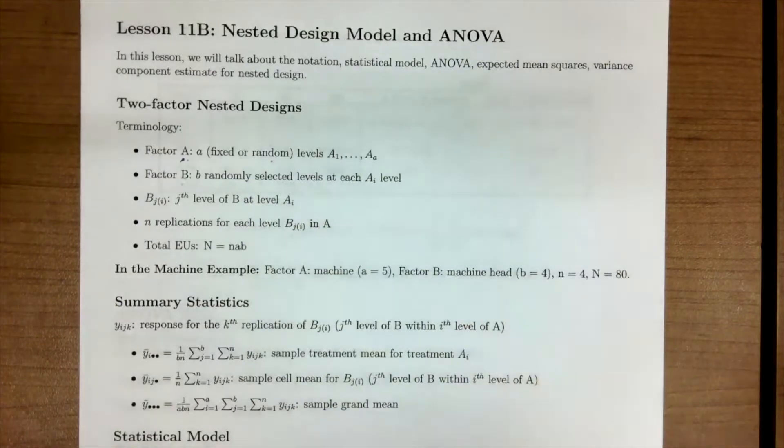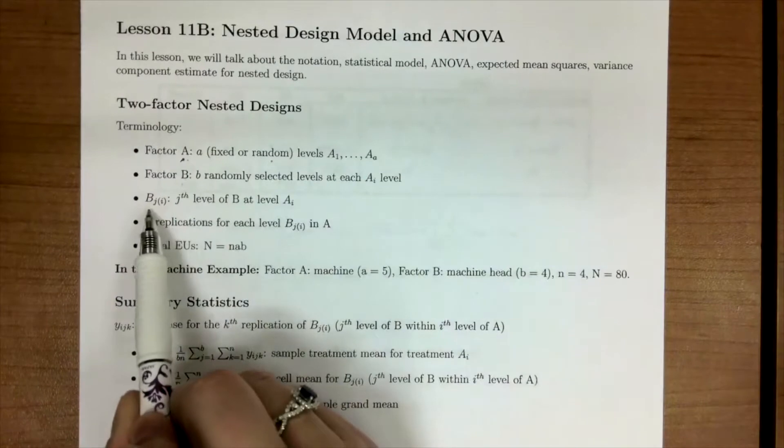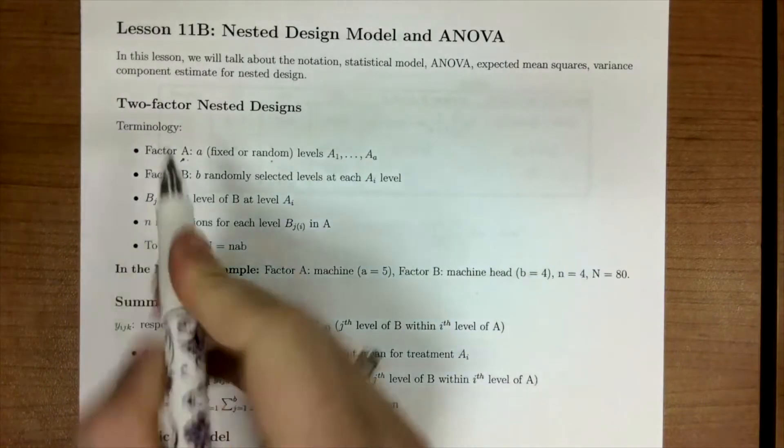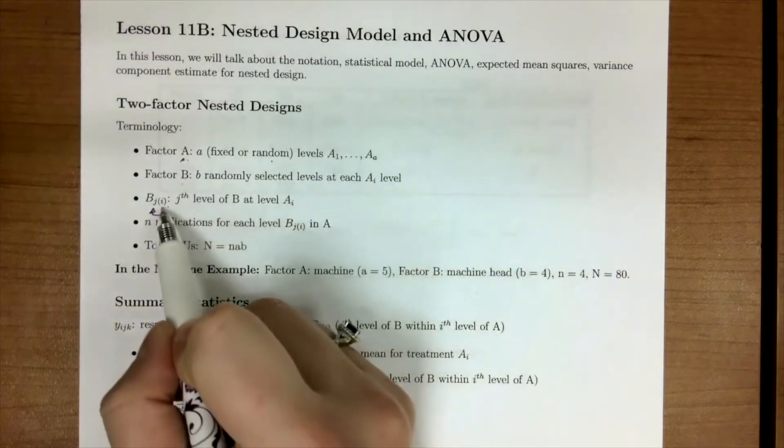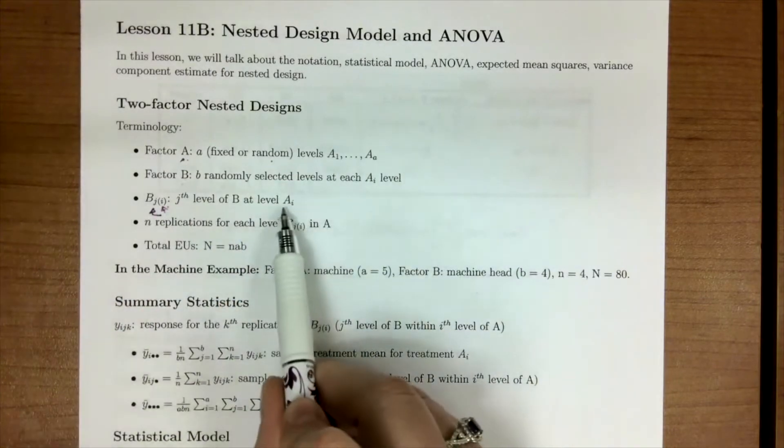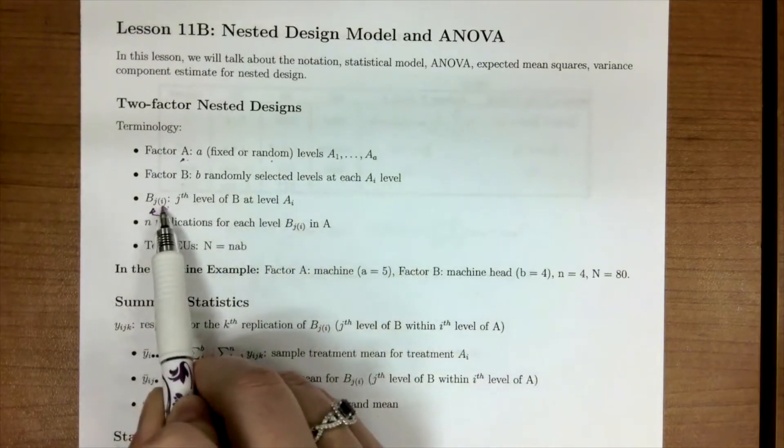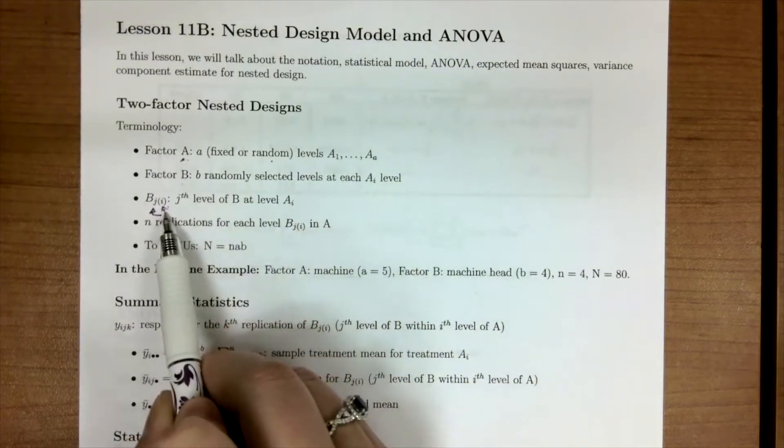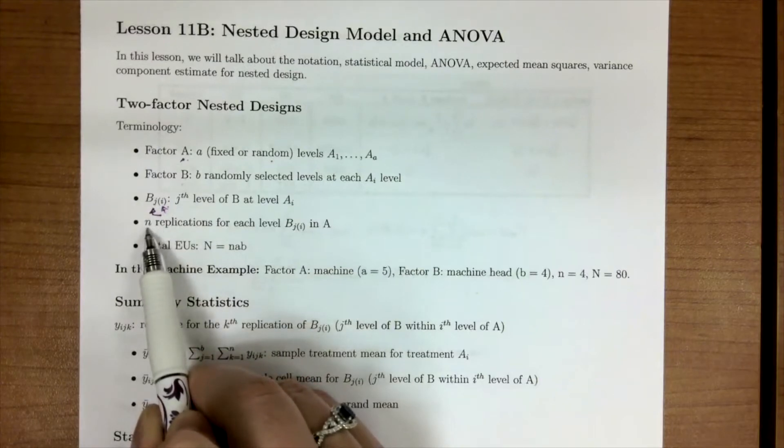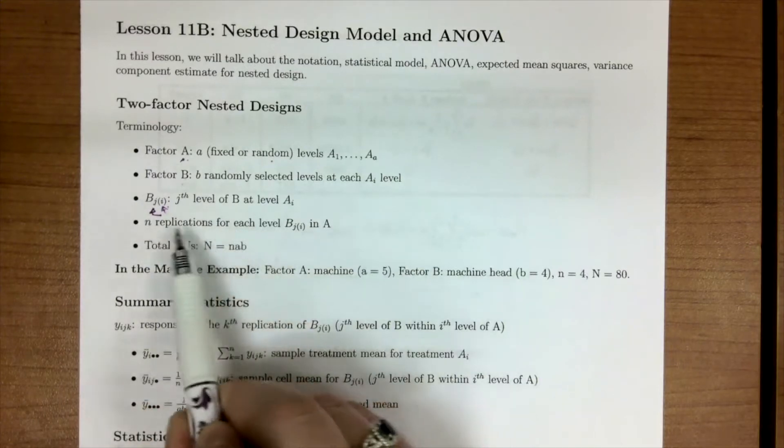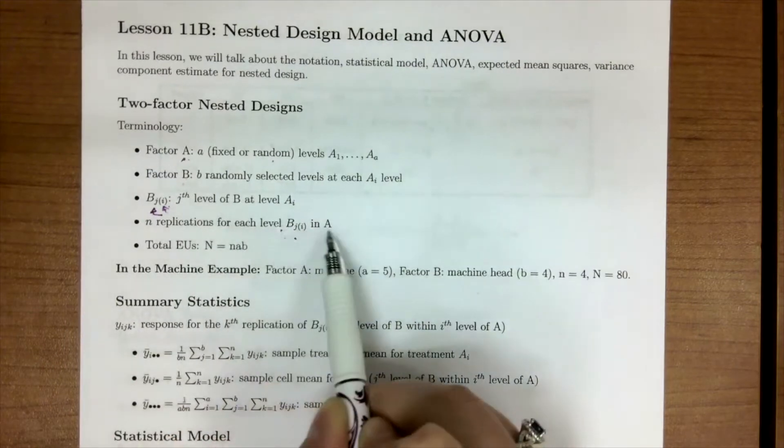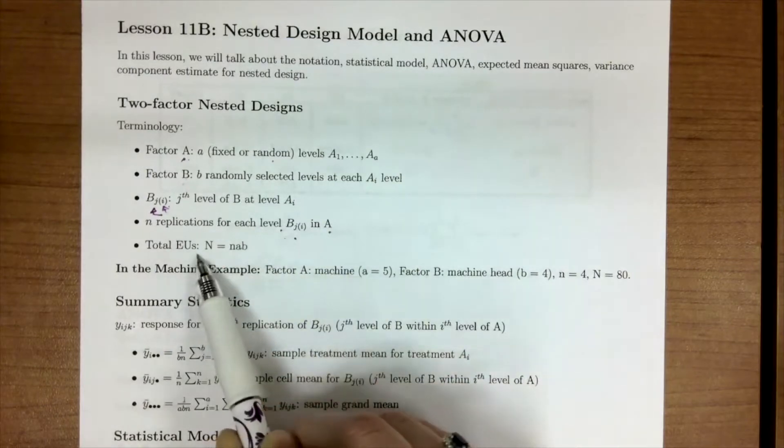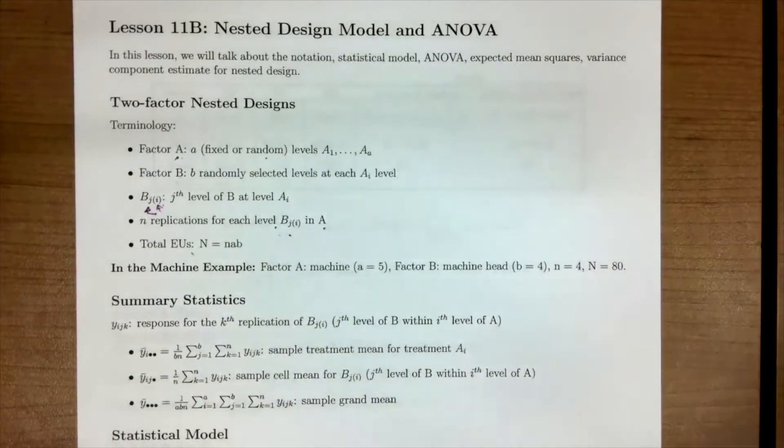Now notation wise, because it's nested, we're going to have this notation, which says our j-th level nested in our i-th, or our upper factor level. For our number of replications is going to come from the number of times, or the number of replications for each level of β_{ji} in A. Our total number of EUs is N times AB. So similar to what we've seen, but now we have this nested type of idea.